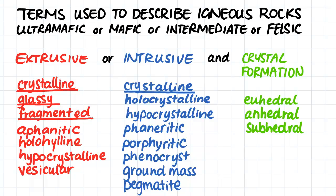We can place all igneous rocks into these two main categories of intrusive and extrusive. If you haven't watched the videos on intrusive and extrusive volcanic activity, or the video that defines ultramafic, mafic, intermediate and felsic magmas, I would suggest you go and watch those videos before continuing with this one.